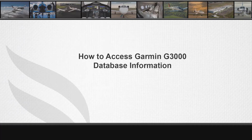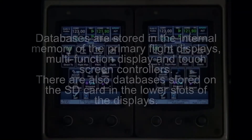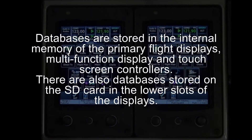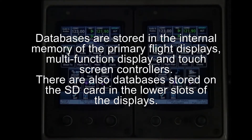This video will show the steps required to access information on the databases utilized by the Garmin G3000 integrated avionics system. Databases are stored in the internal memory of the primary flight displays, multi-function display and touch screen controllers, and on supplemental data cards installed in the lower card slot on each display.